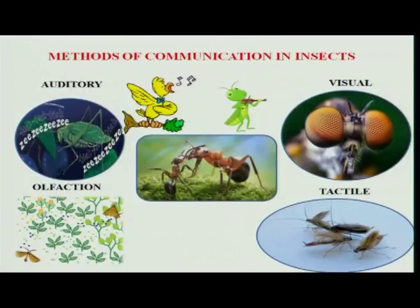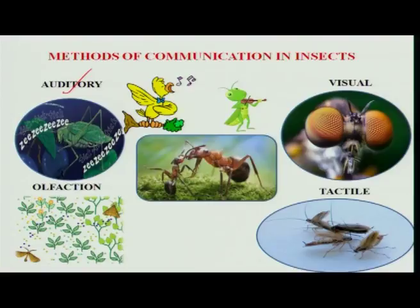On this earth, each and every organism has developed its own communication system. In vertebrates, the communication system is through auditory and visual. But in the case of insects, apart from auditory and visual, another system of communication is through olfaction and also tactile.